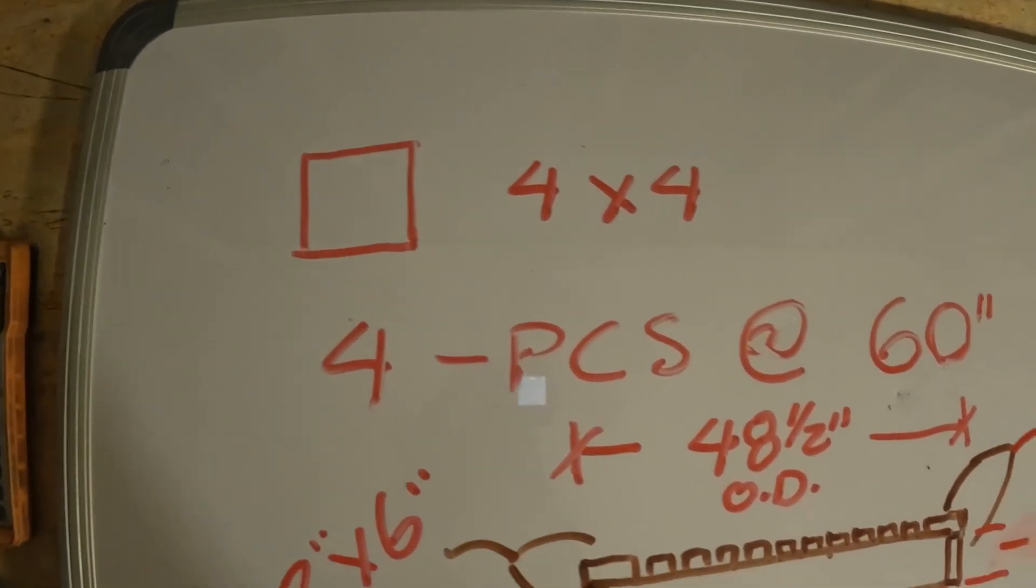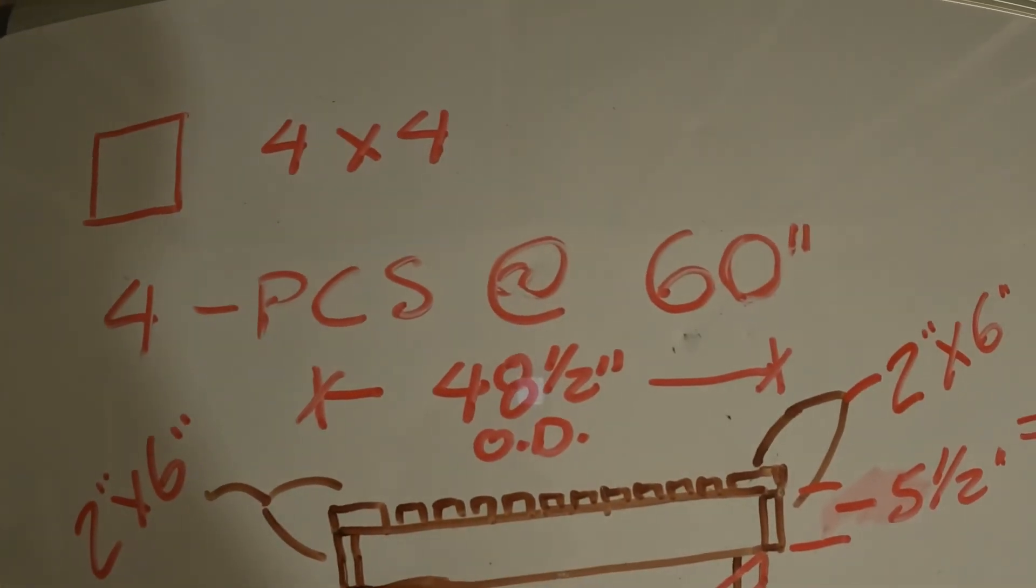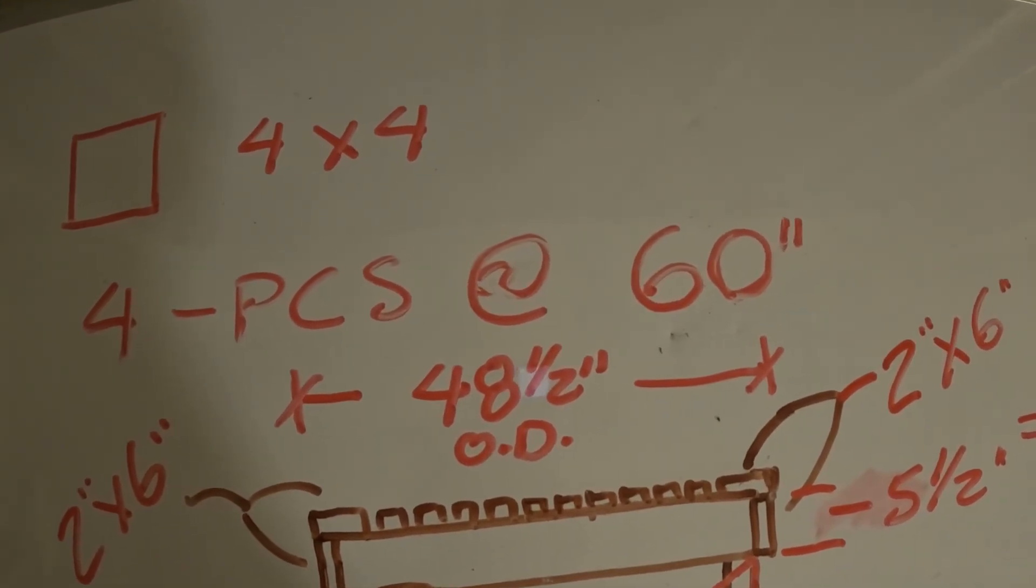Four four by four posts at 60 inches, five foot roughly. Cut a ten footer in half.